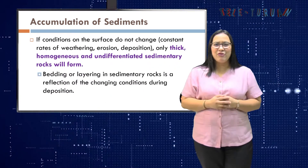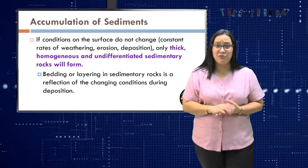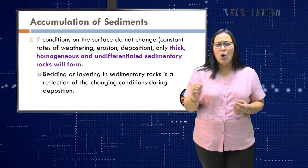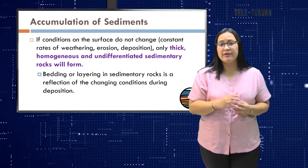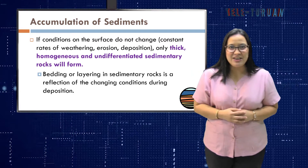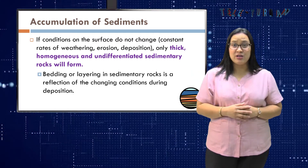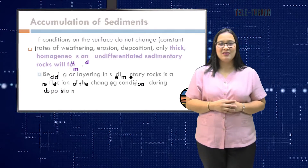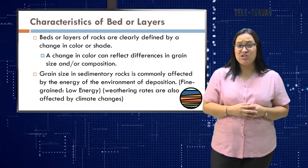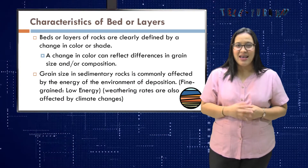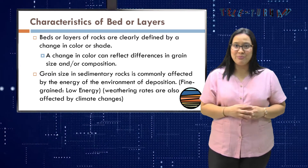Another is, if conditions on the surface do not change — that is, constant rates of weathering, erosion, and deposition — only thick, homogenous, and undifferentiated sedimentary rocks will form. Bedding or layering in sedimentary rocks is a reflection of the changing conditions during deposition. Beds or layers of rocks are clearly defined by change in color or shape, and a change in color can reflect differences in grain size and/or composition.